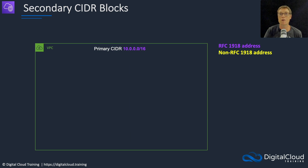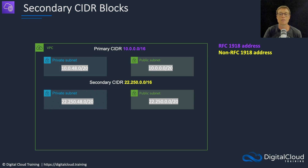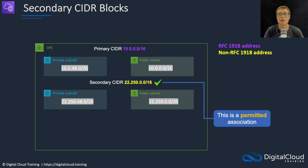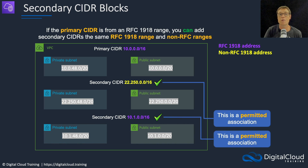Let's look at another example. In this case, the primary CIDR block is a private IP address range within the RFC 1918 address space. We add a secondary CIDR block using a non-RFC 1918 address - and yes, that is allowed. You can associate a secondary CIDR block from a non-private address space if your primary CIDR block is from a private address space. If we then try to add a third CIDR block using a private address space, that's also allowed - a permitted association. So if the primary CIDR block is from an RFC 1918 range, you can add secondary CIDRs from the same RFC 1918 range and from non-RFC 1918 ranges. Note that it must be from the same range - for example, both in the 10.x range.